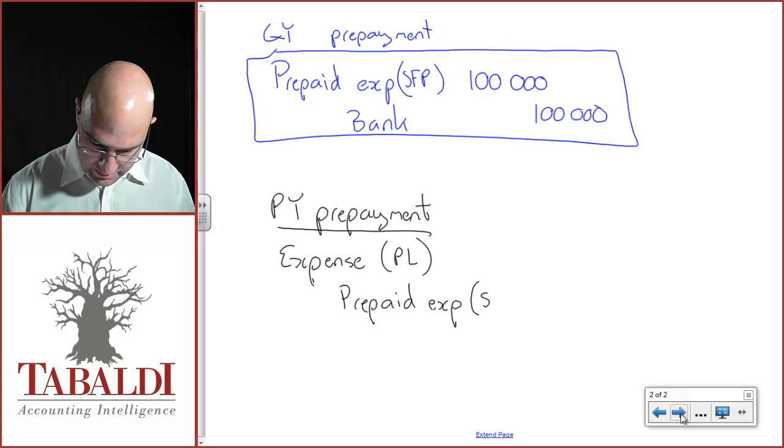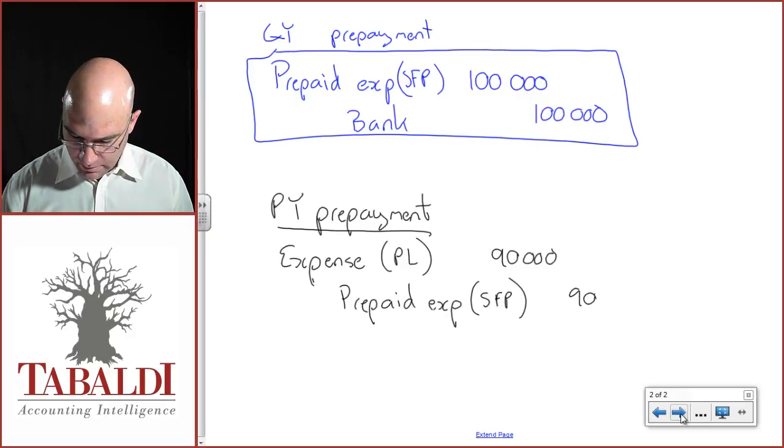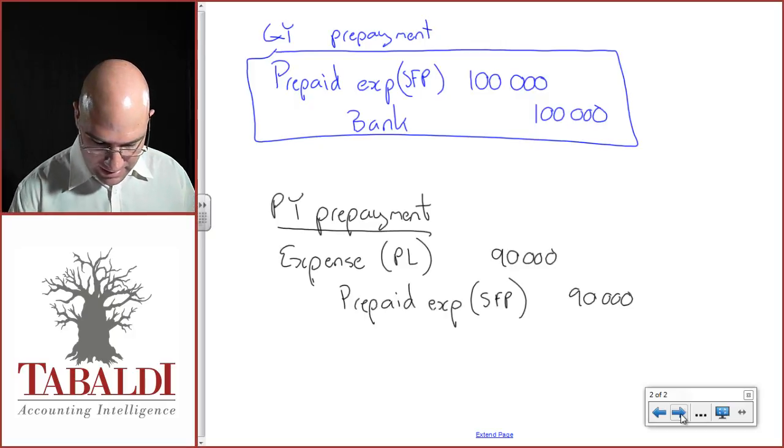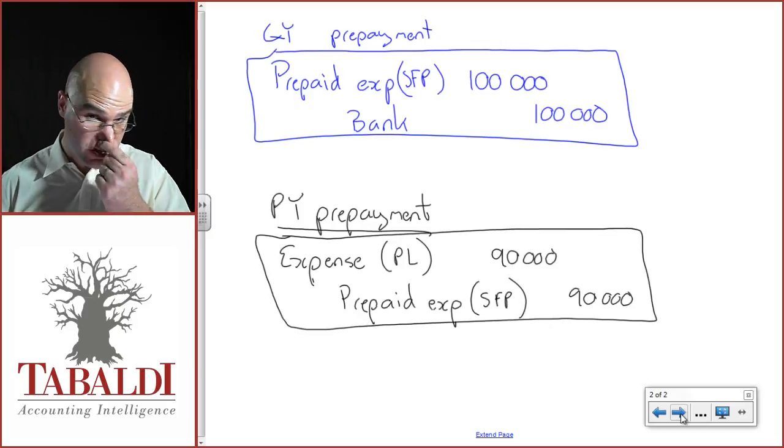That was in statement of financial position. And let's say last year's prepaid expense was ninety thousand, resulting in an expense in the current year of ninety thousand for the January rental.